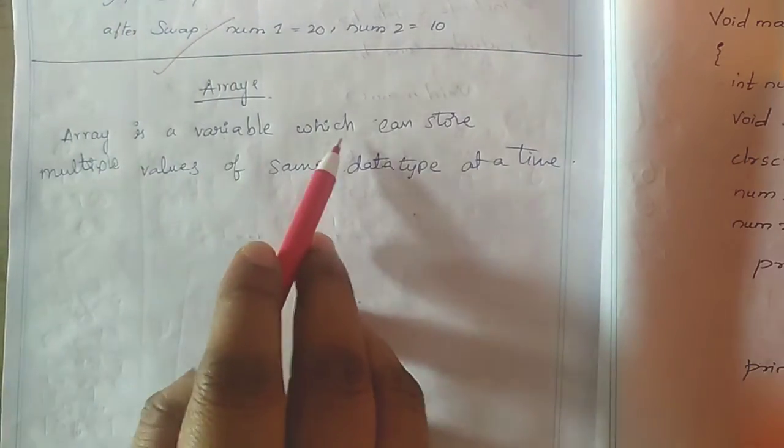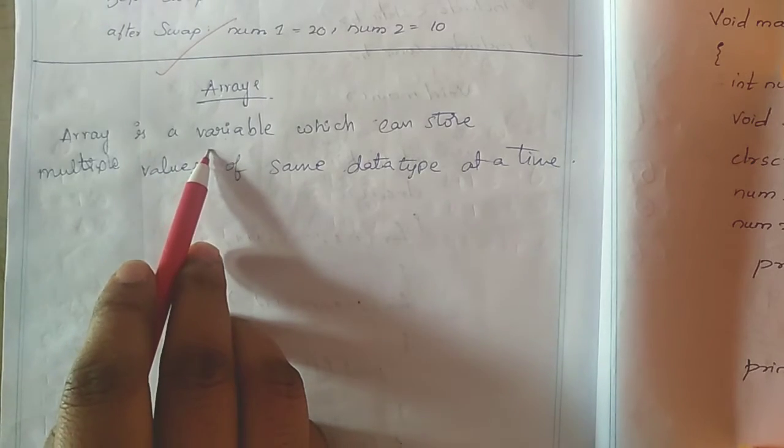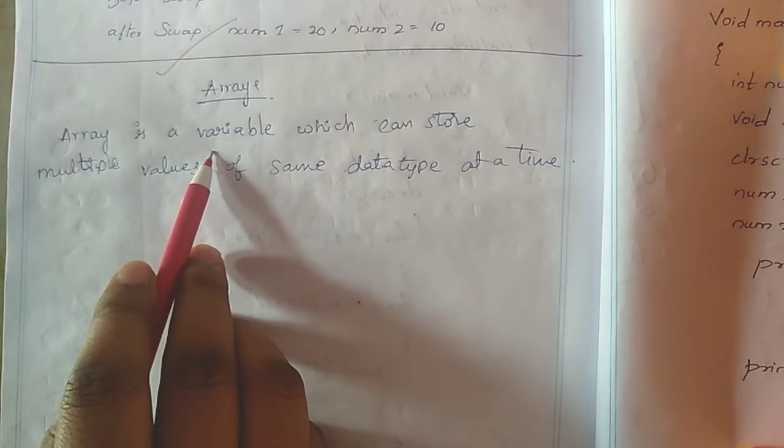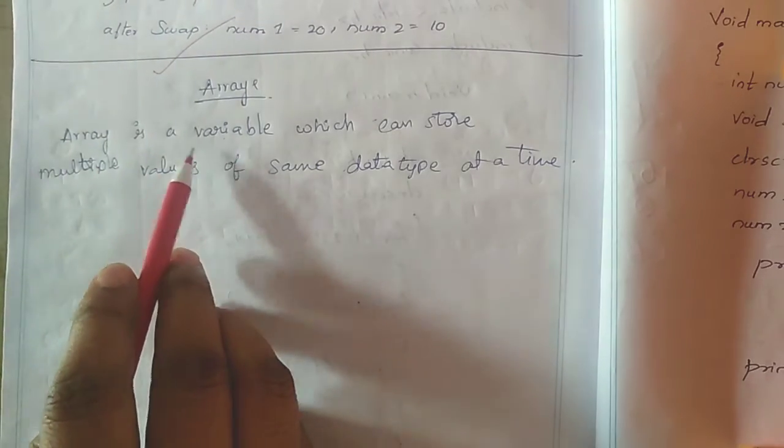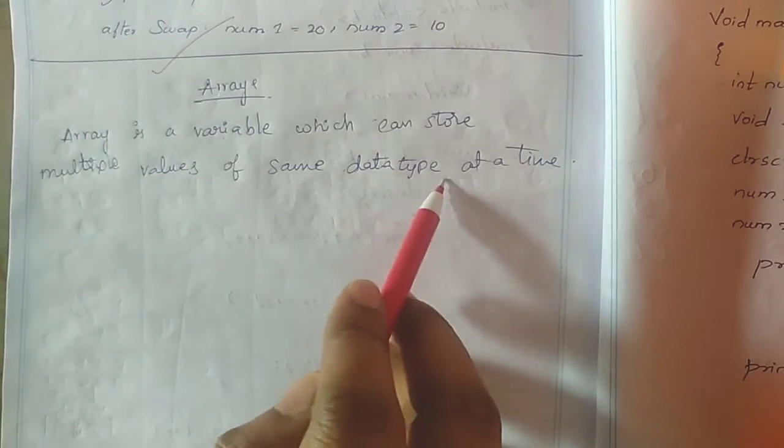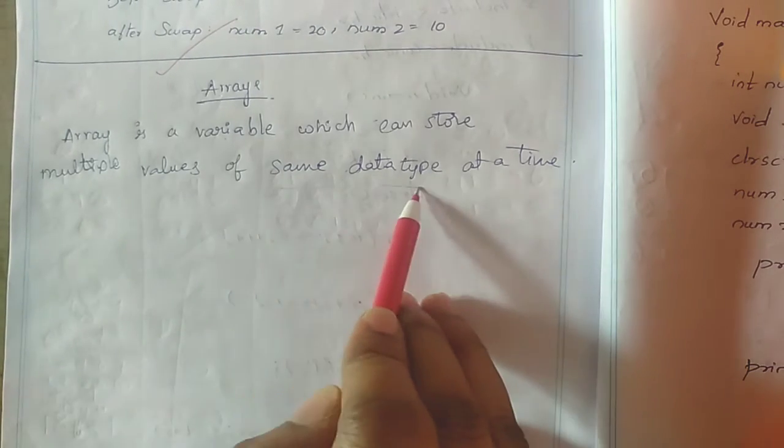An array is a variable which can store multiple values. A normal variable can hold only a single value, but an array variable can store multiple values at a time. All these multiple values are of the same data type.